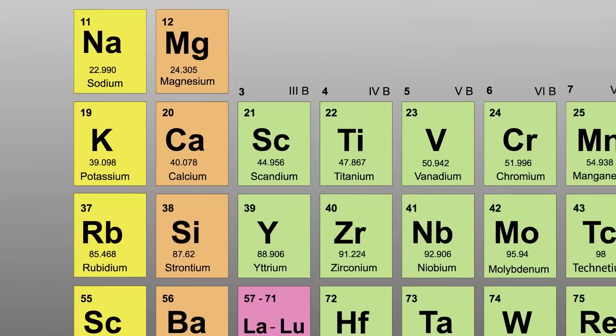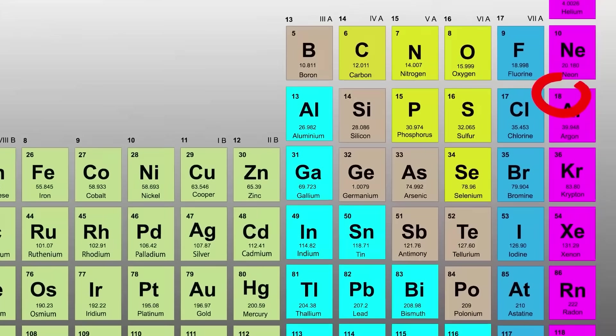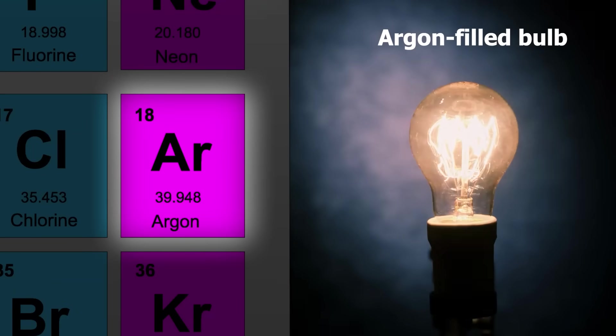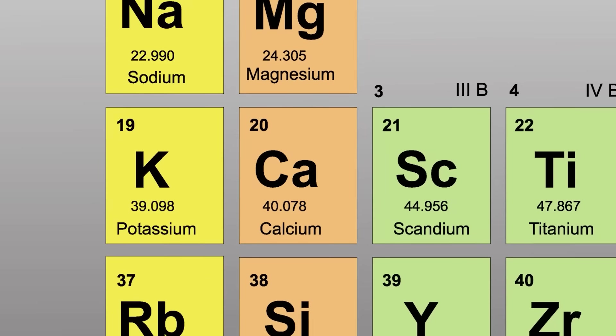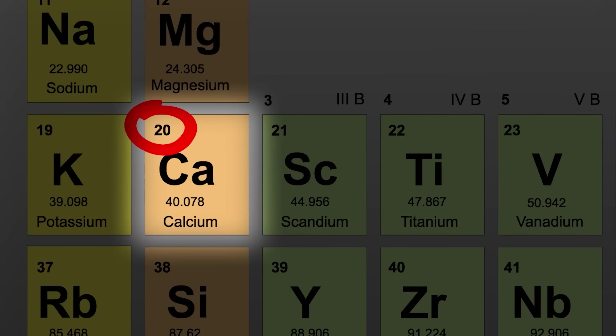If we take away just one proton, we would have element 18, argon, which is a gas at room temperature, and is almost completely unreactive. Similarly, if we add just one proton to element 19, we get element 20, which is calcium.